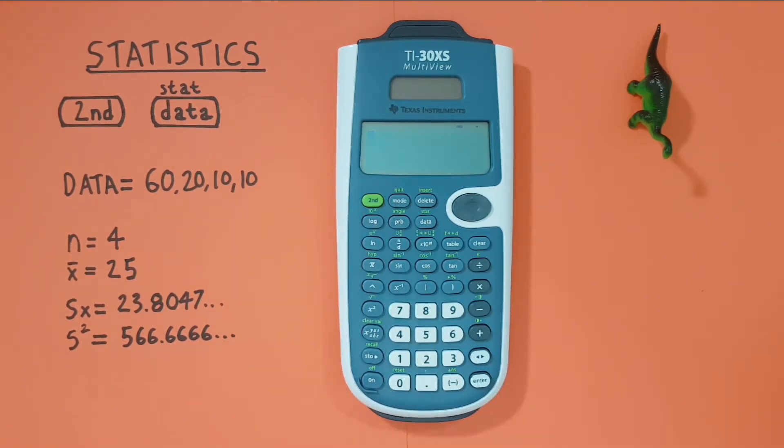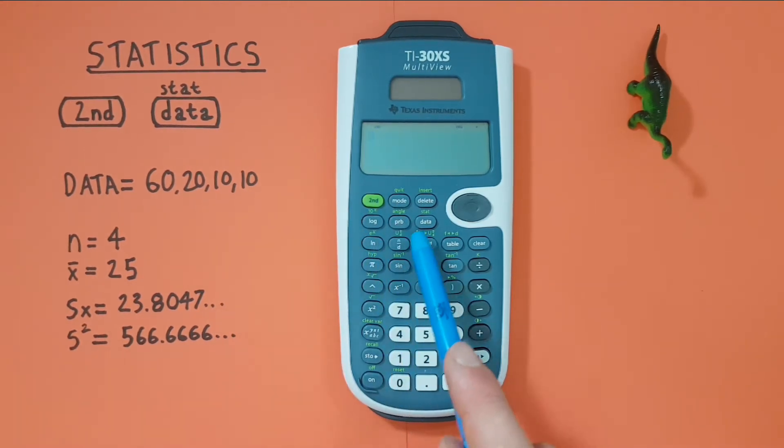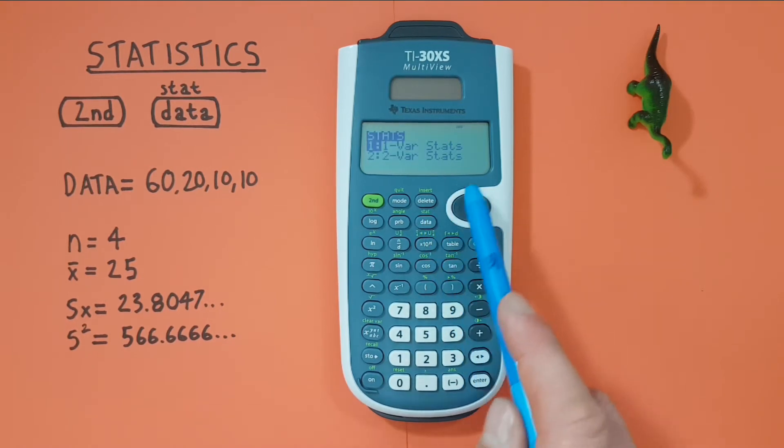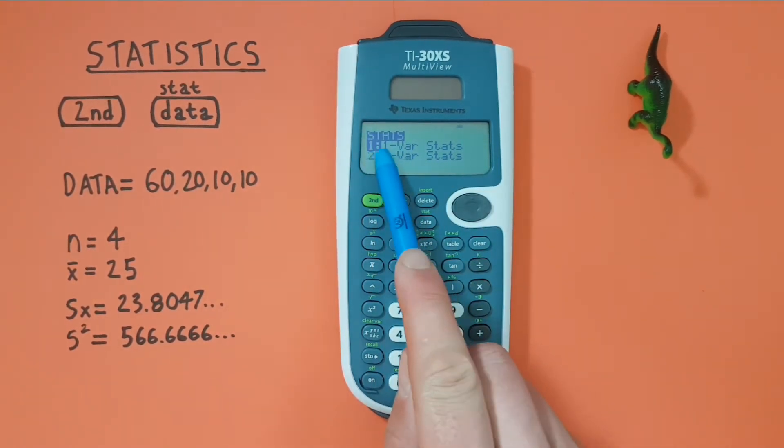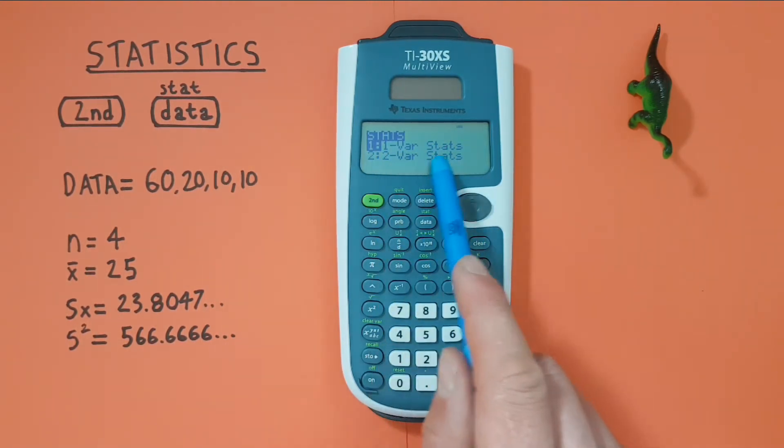We're back at our main screen now and if we want to calculate our statistics we press second and then the data key. And that'll bring us to this menu here where we choose number one, one bar stats or one variable stats. Which is what we're looking for in this example.